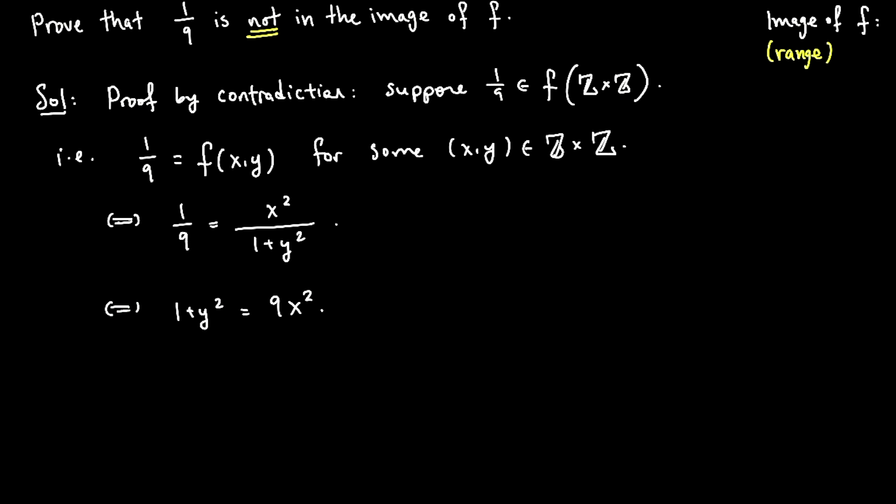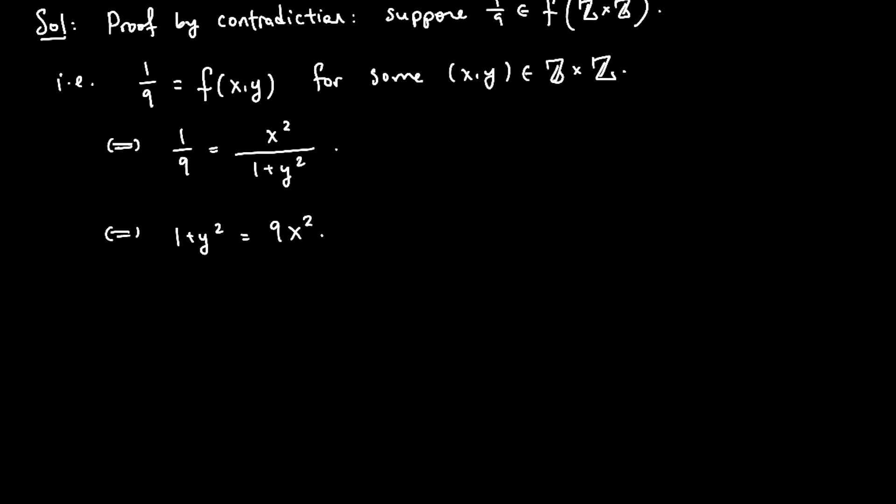What I want to do is derive a contradiction, show that an equation like this is impossible. And a nice way to do that is, well let me bring this y squared over to the other side, and the reason I do that is because I know that there's going to be a difference of squares. So let's write it as 9x squared minus y squared equals 1.